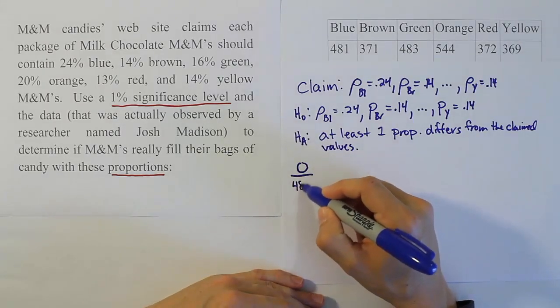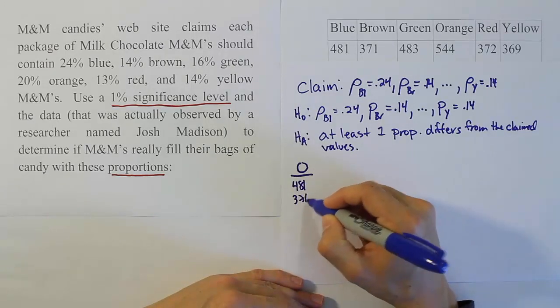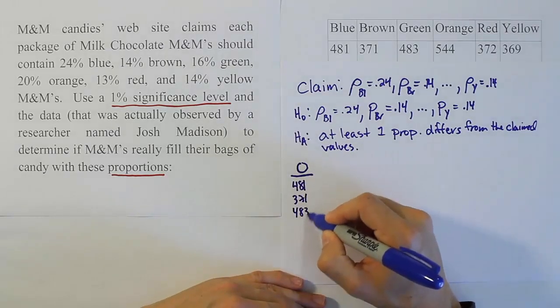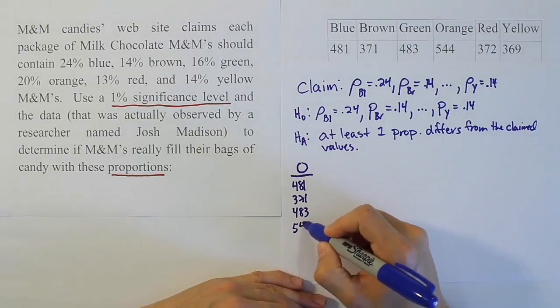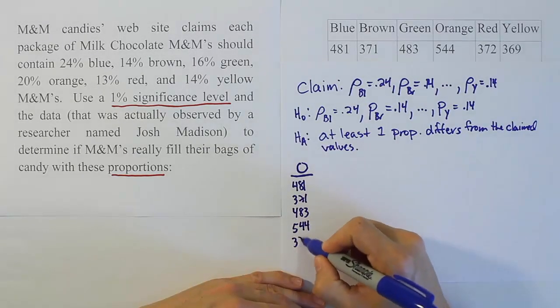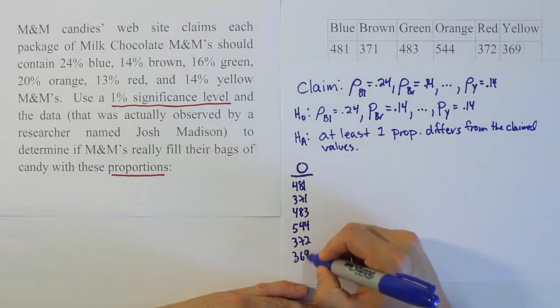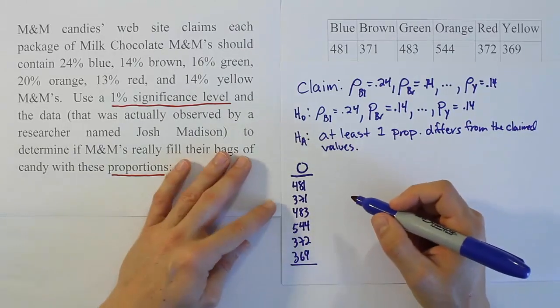Let's start with all the observations. We have 481, 371, 483, 544, 372, and 369. Those are all the observations for the problem.